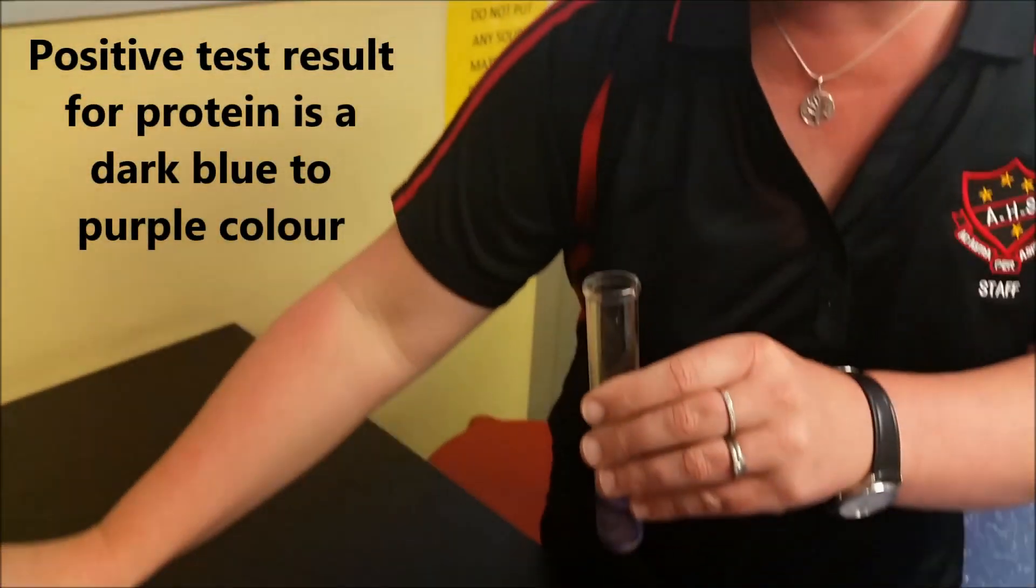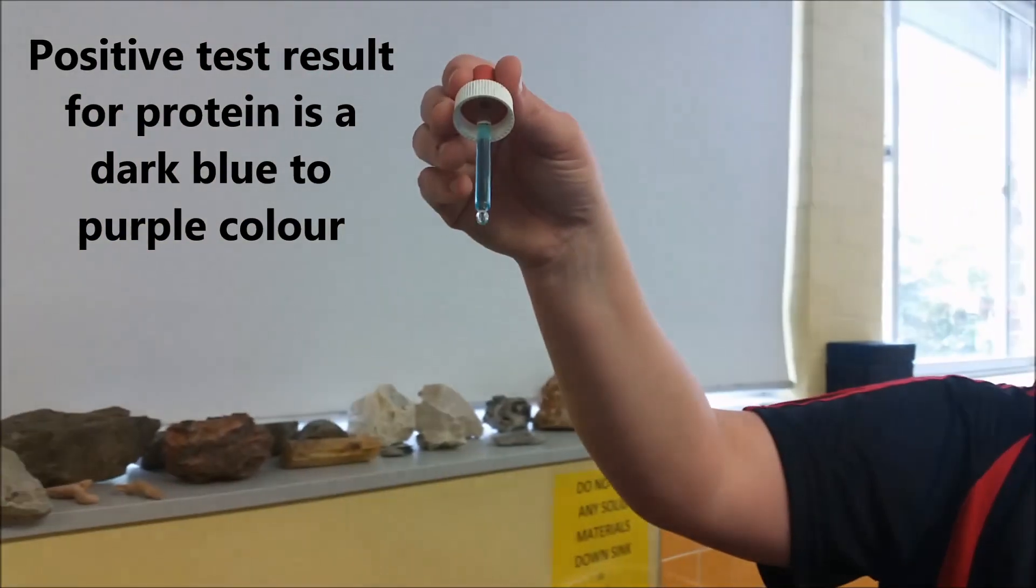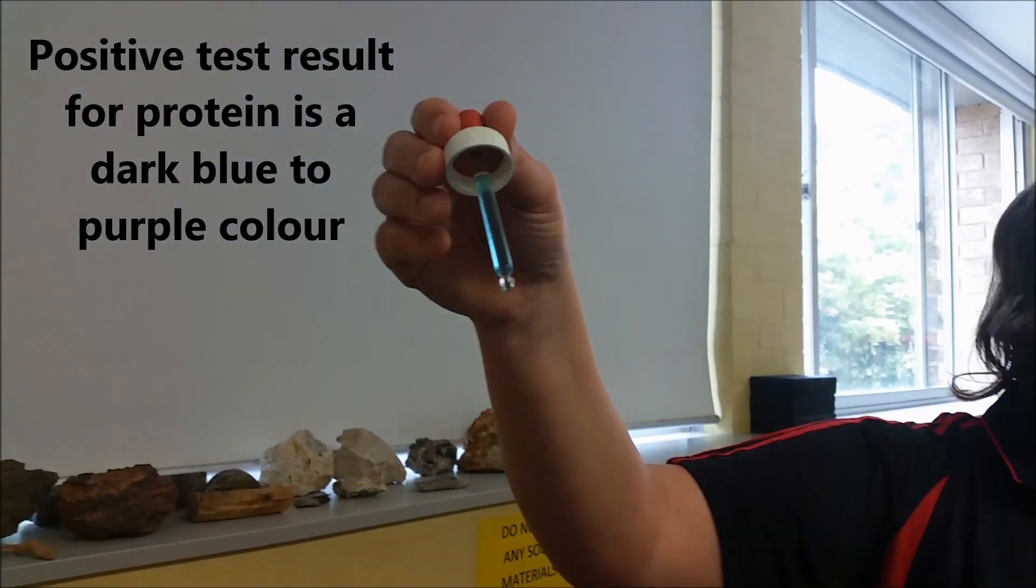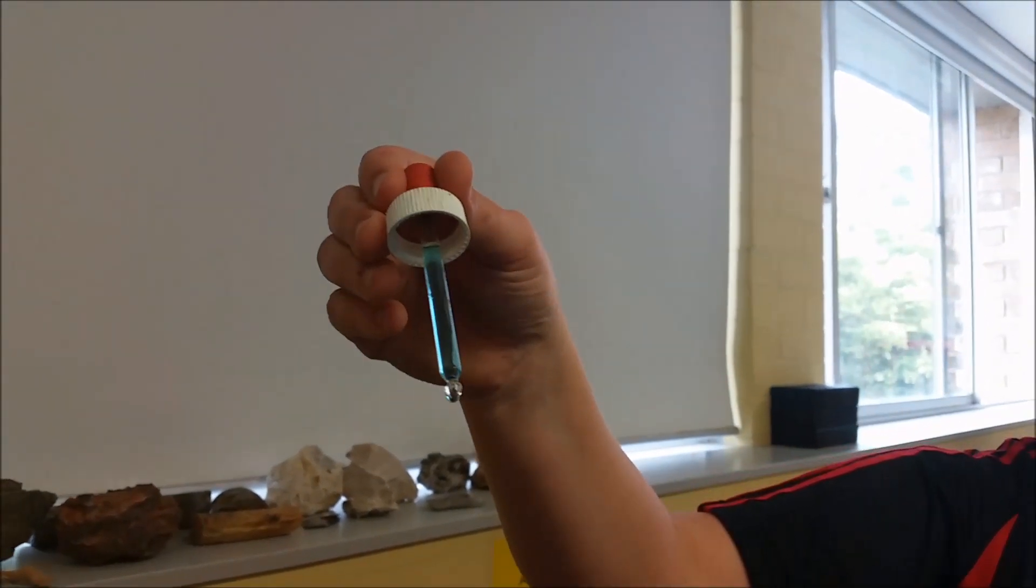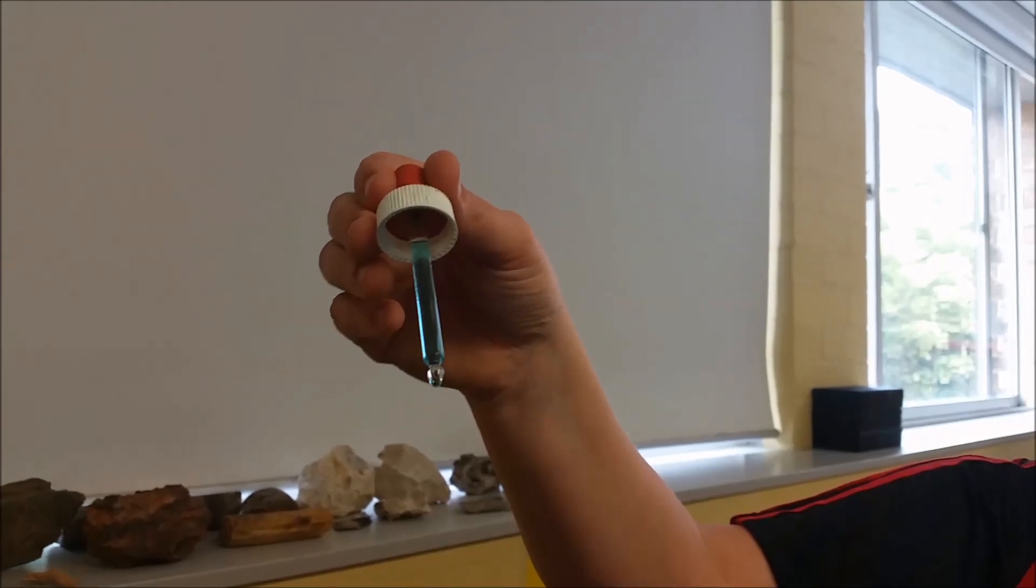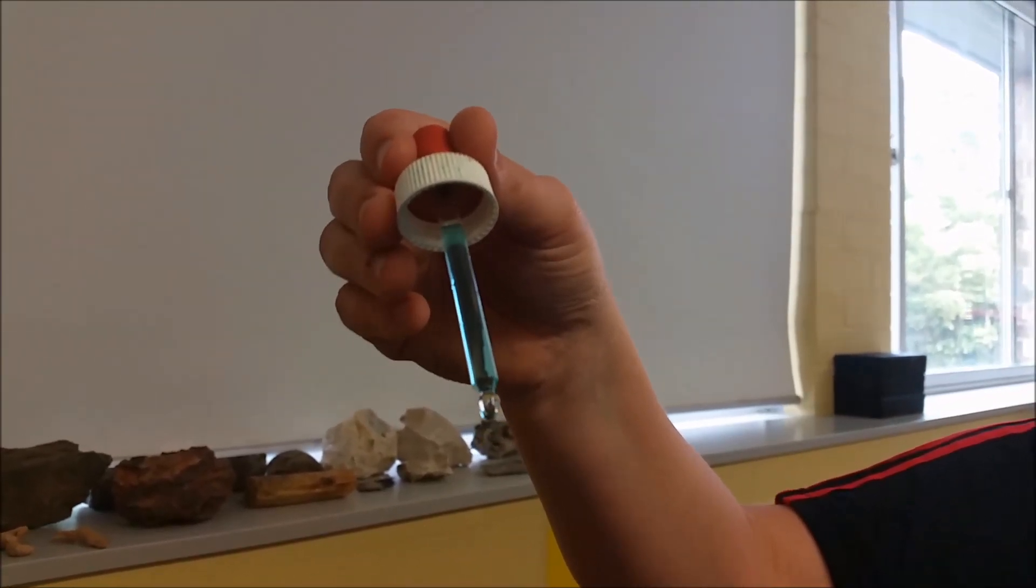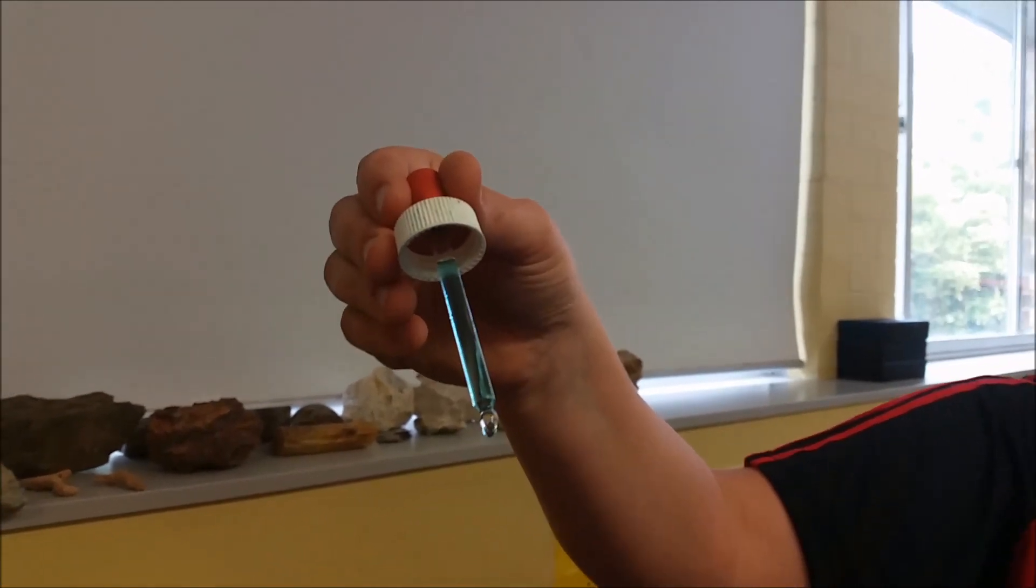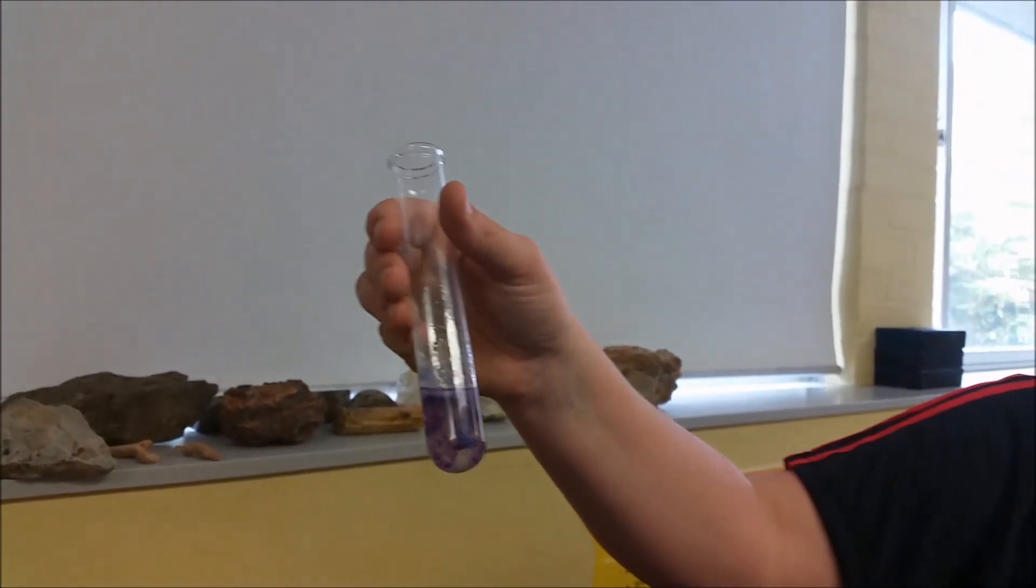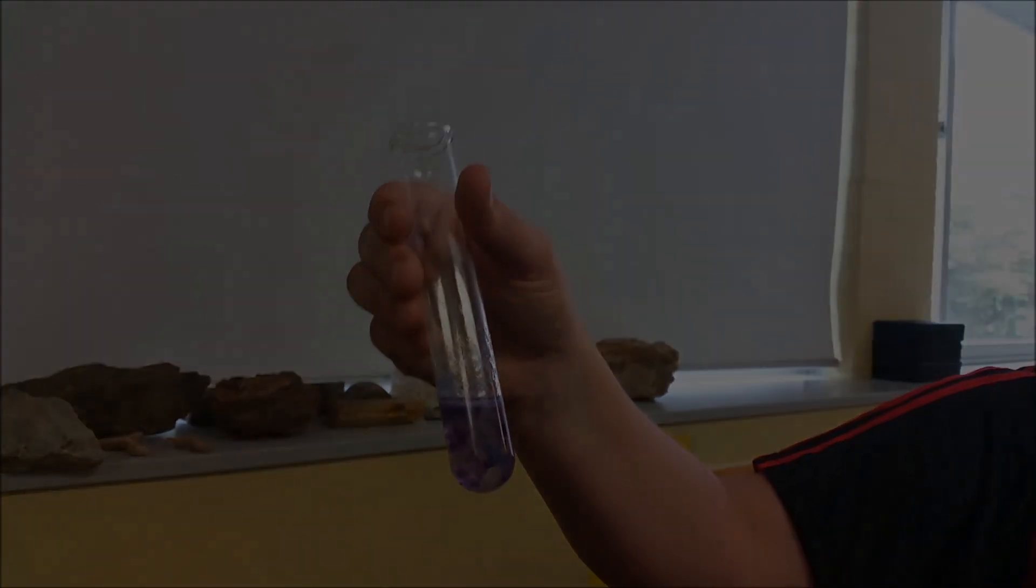I'll just show the copper sulphate again. Can everyone see the color of the copper sulphate? You guys have used that before. That with the copper sulphate, if it stays that sort of shade blue, it hasn't got protein. It can go a really deep shade of blue or the purple. So that blue, deep blue to a purple is the indicator of a positive test result for protein.